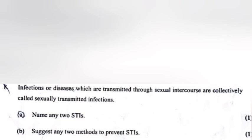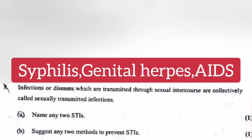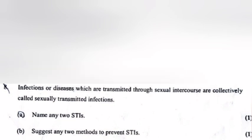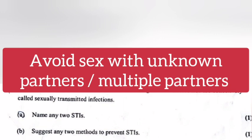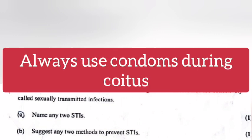Question 8: Infections or diseases which are transmitted through sexual intercourse are collectively called sexually transmitted infections. A) Name any two STIs — answer: syphilis, genital herpes, AIDS. B) Suggest any two methods to prevent STIs — 1: avoid sex with unknown or multiple partners; 2: always use condoms during coitus.